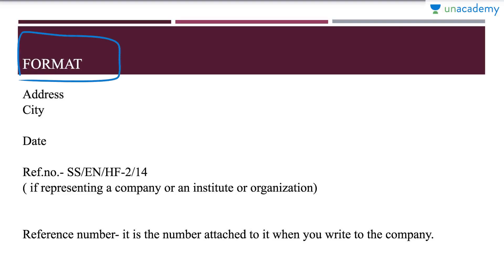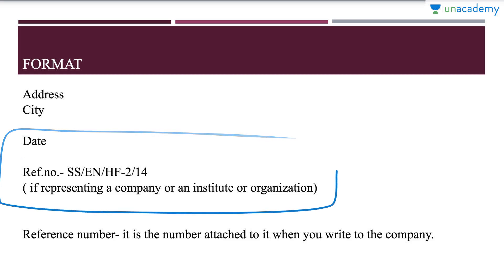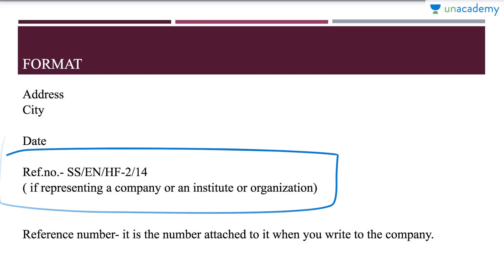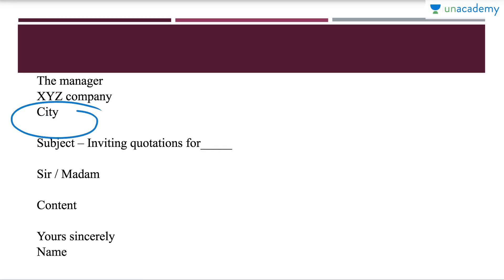Talking about the format: on the very left-hand side you will mention the address and city of the firm you are writing from. Leaving a line, you will mention the date. Again leaving a line, you will mention the reference number — you can make up a reference number. Then you will write the name of the head of the organisation, the name of the organisation on the next line, and then the city. Again leaving a line, you will mention the subject, which will be inviting quotations for whatever you are going to ask them.